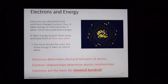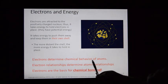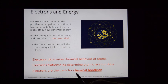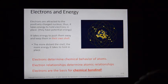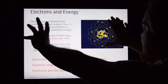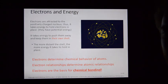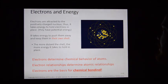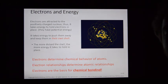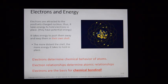Electrons determine the chemical behavior of atoms. Electron relationships determine atomic relationships, and electrons are the basis for chemical bonding. If two atoms come together, the electrons interact first — the numbers of electrons and their placement determine chemical bonding and the capacity for it. So electrons are very important in establishing these relationships.